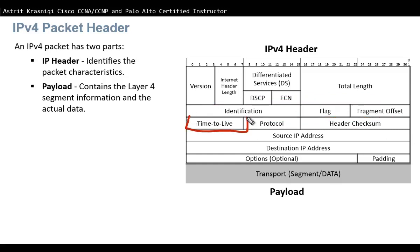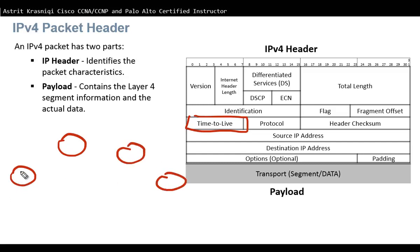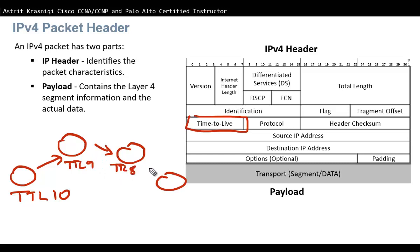The field after that is Time to Live, which limits the lifetime of a packet. We don't want packets looping forever. For example, imagine four routers — the source device sets the Time to Live, say to 10. At each hop, the router reduces that value by 1: 9, then 8, then 7. When it reaches 0, the packet is considered stuck in a loop and is discarded. You can set Time to Live up to 255.